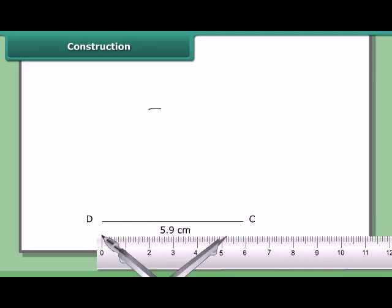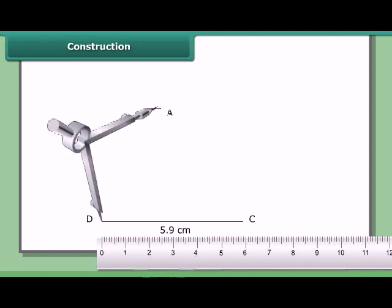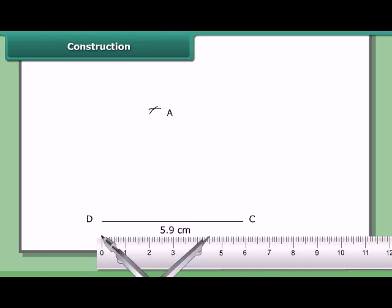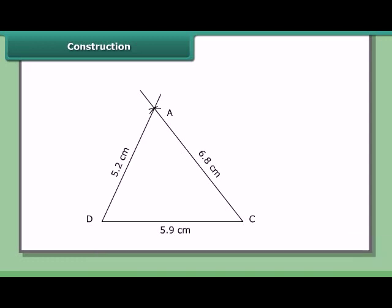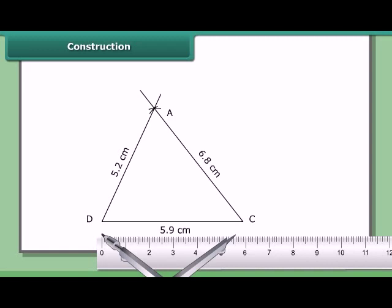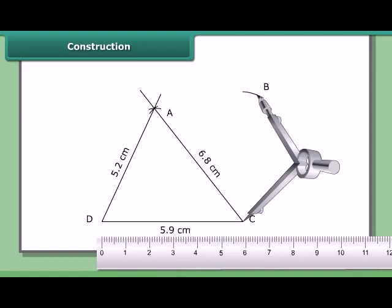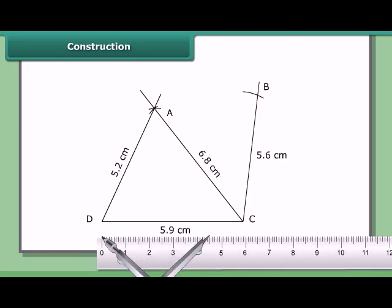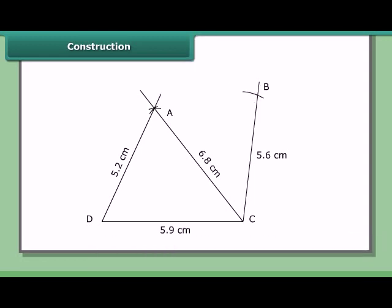Constructing triangle ADC: With C as center and radius 5.6 cm, draw an arc on the other side of AC. With A as center and radius 4.5 cm, draw another arc to cut the previous arc at B. Join CB and AB. Then ABCD is the required quadrilateral.